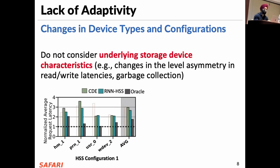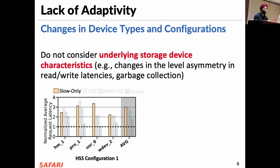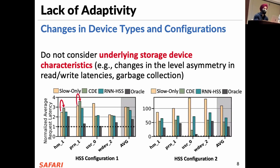These techniques also lack adaptivity to device types and configurations because they do not consider the underlying storage device characteristics. Here we show the three policies and also an extreme case where everything is placed in slow memory, referred to as slow only. We observe that the performance of some workloads is even worse than the slow only policy, while in another configuration they perform better. Therefore, high diversity in device characteristics makes it really difficult to create one generic policy that works for all different configurations.